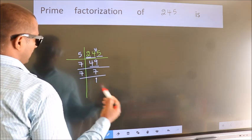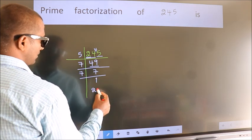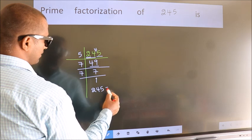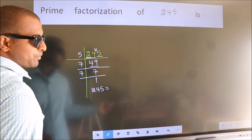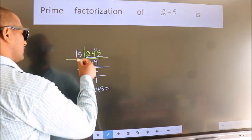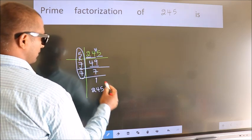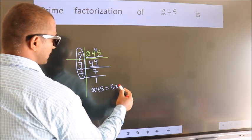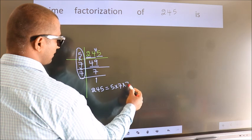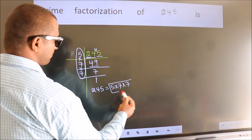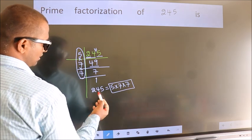Therefore, prime factorization of 245 is the product of these numbers: that is 5 into 7 into 7. This is the prime factorization of 245.